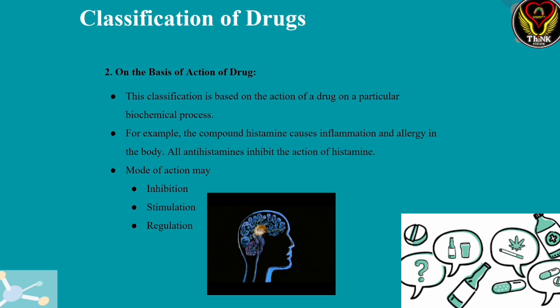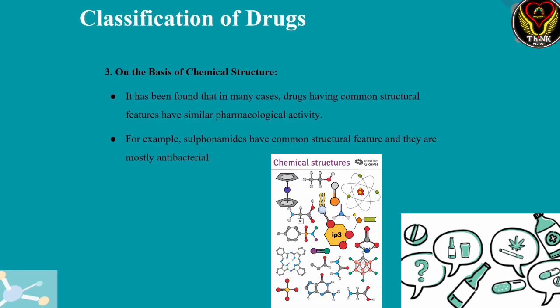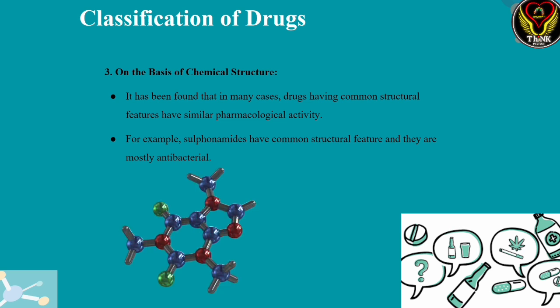Some drugs stimulate — for example, ecstasy stimulates dopamine regulation. We also have hormonal regulation as a classification. Regarding chemical structure classification, we find a drug's structure — the structure must relate to its function. For example, sulfa drugs contain a sulfur group in their structure.